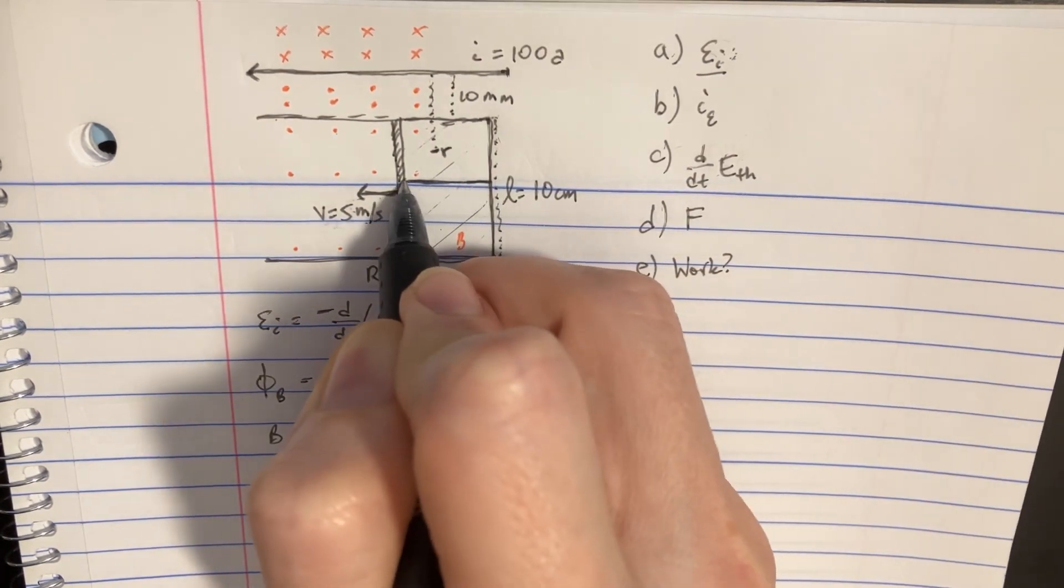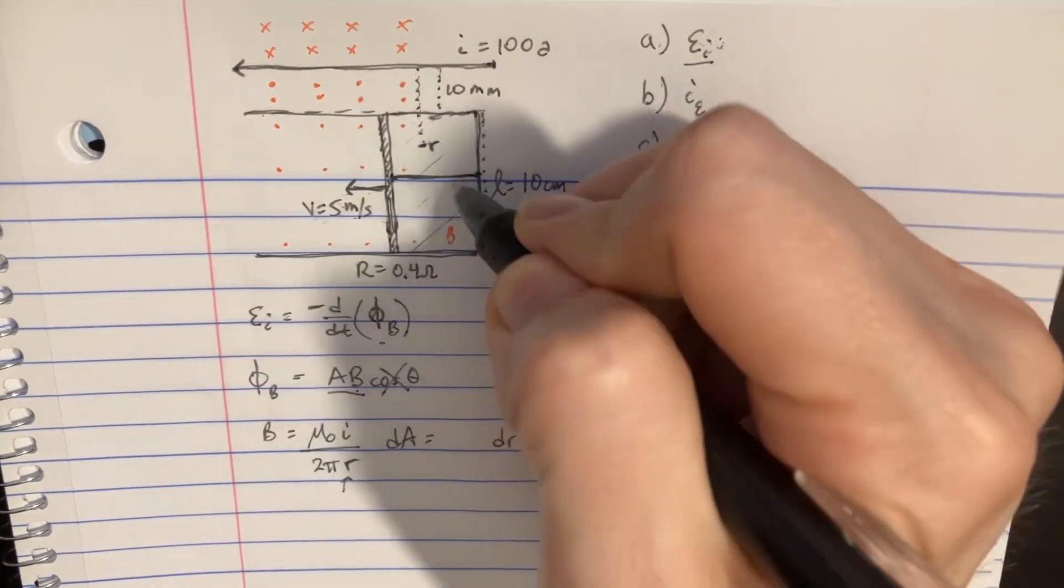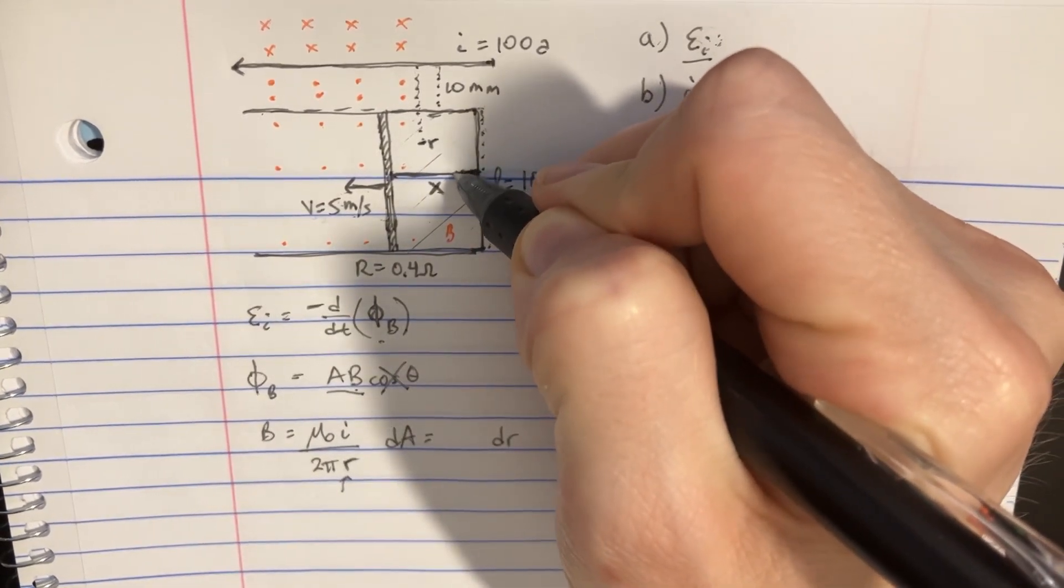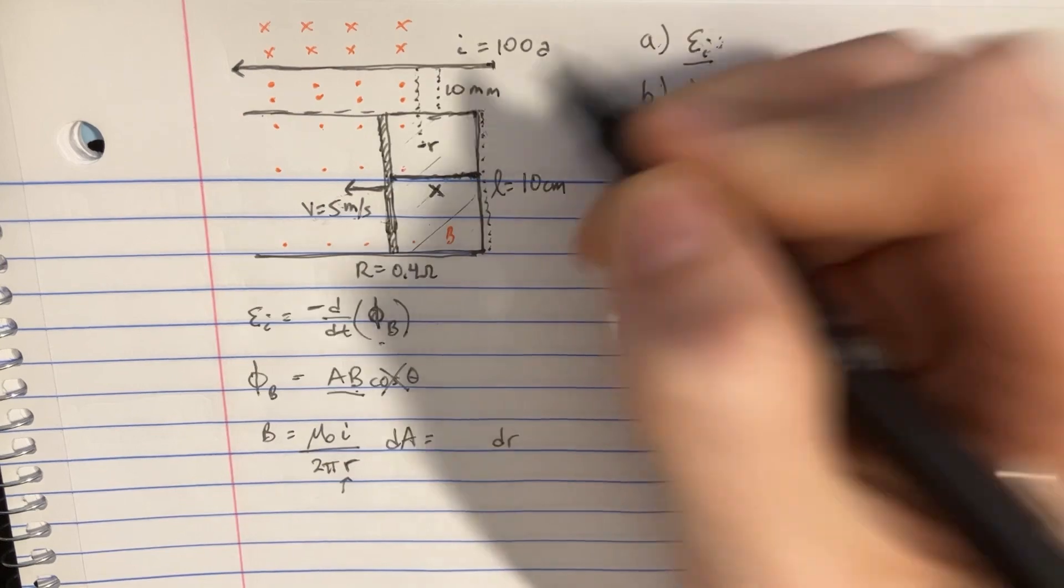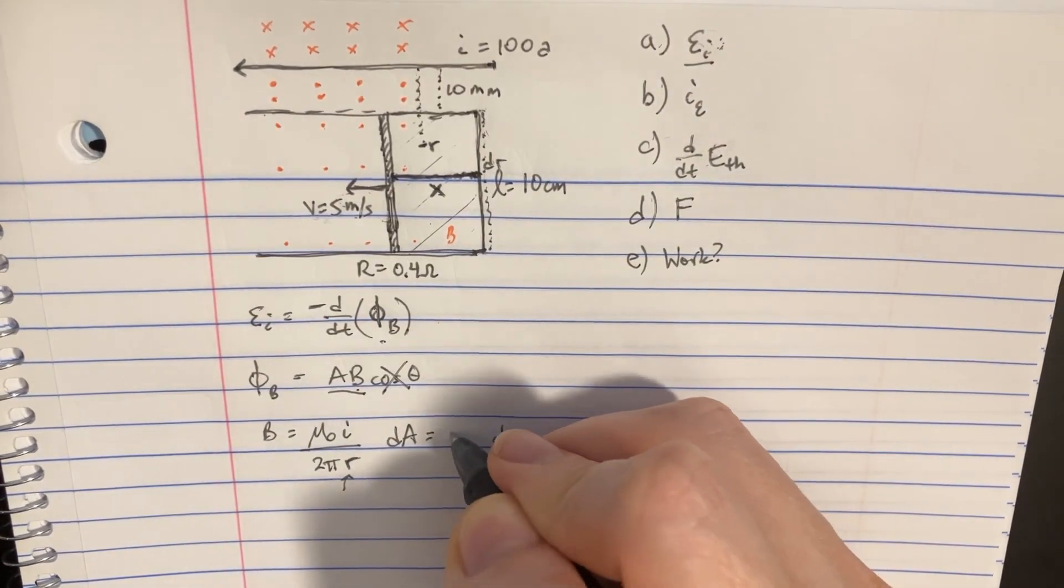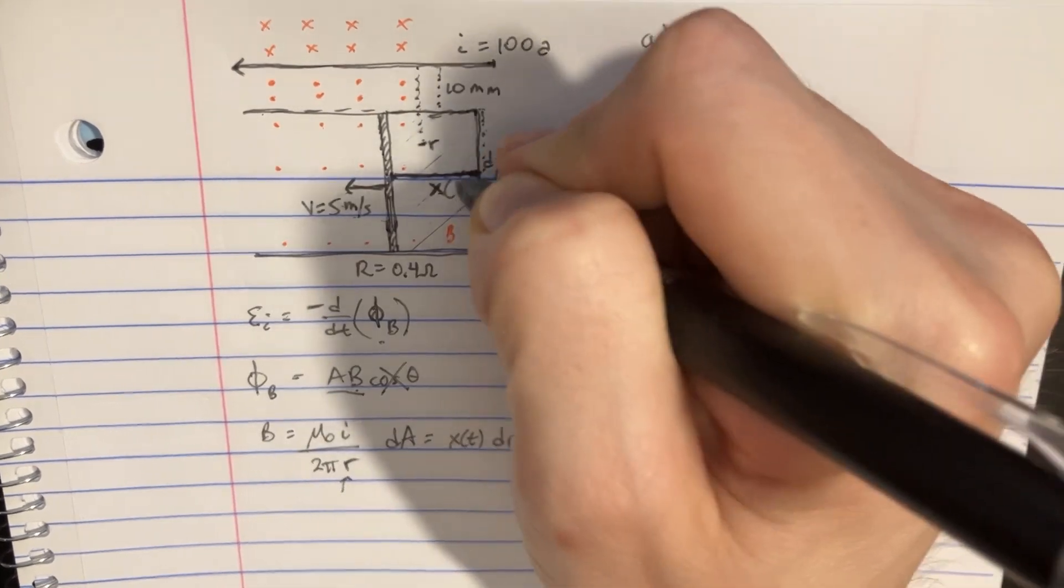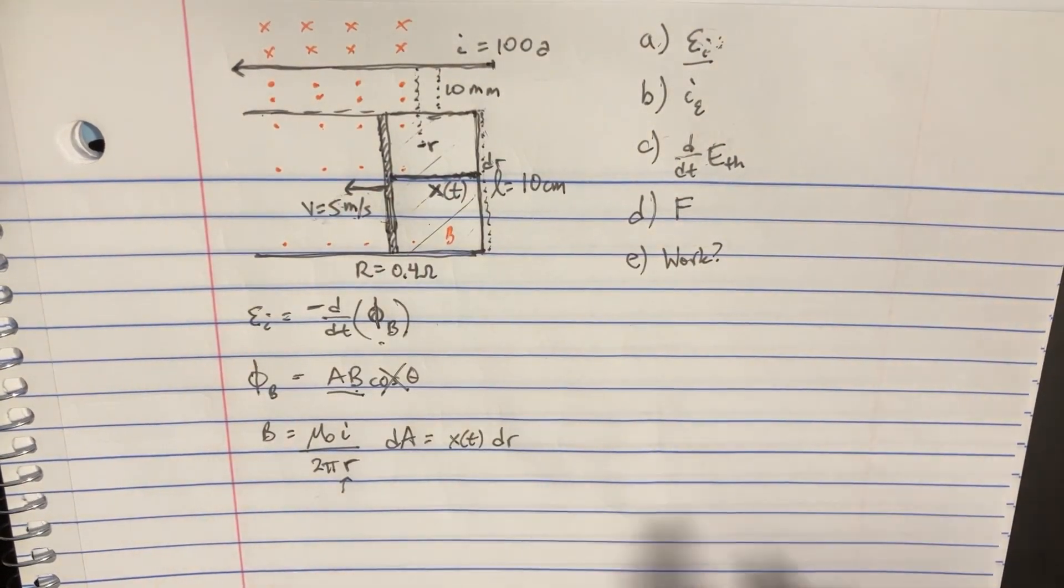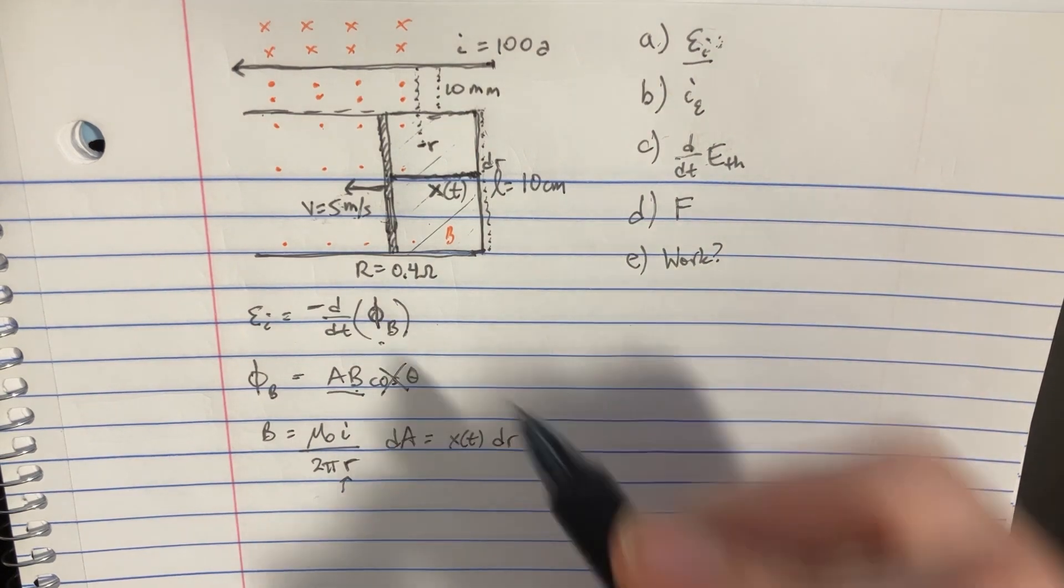So the cool thing is, if we were to try to make an area out of this, this would be like the length x. And then if you have a very small distance in this way, then that would be the dr. So you could represent this area by saying x, and this would be a function of x in time, by the way, because this will grow with time. So the function of x in terms of time here, times the dr there.